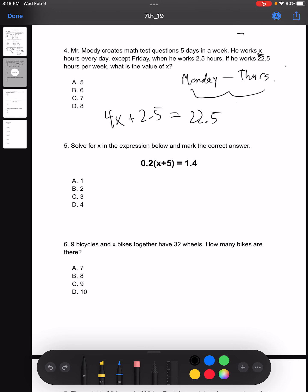We subtract 2.5 first on both sides, get 4X is equal to 20, then you get X is equal to 5, making our answer A.